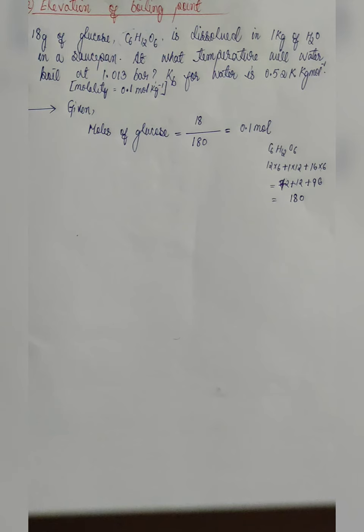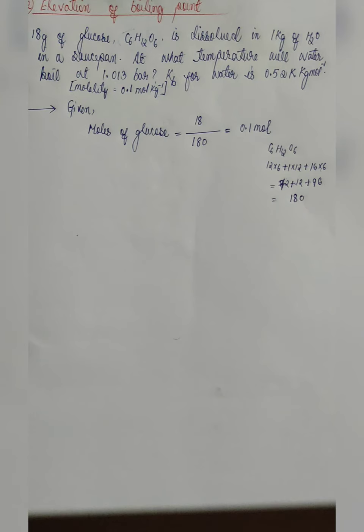Let us try to solve the numerical for the second colligative property, which is elevation of boiling point. 18 gram of glucose is dissolved in 1 kg of water in a saucepan. At what temperature will water boil at 1.013 bar? Kb for water is 0.52 K·kg/mol. Since in this question we are not asked to find the molar mass, we will use the simple formula where boiling point is mentioned, because the question asks us to find the temperature at which the water will start boiling.